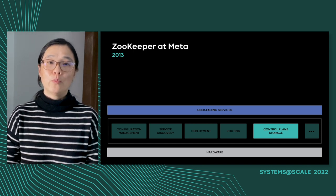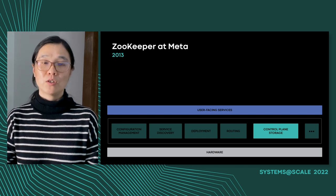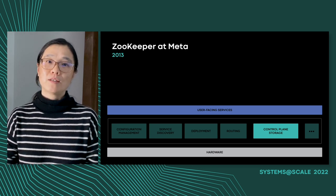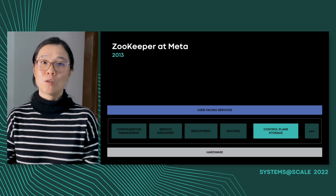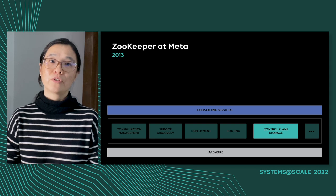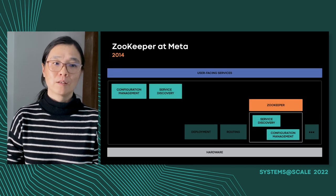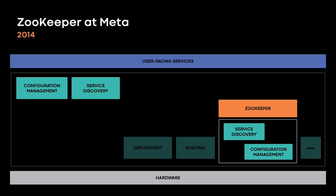However, we didn't stop at one single cluster. Over the years, ZooKeeper has grown into a control plane storage system that powers a lot of services at Meta. Around 2014, ZooKeeper started to power Service Discovery and Config Management at Meta. We had so many clusters — we needed Service Discovery and Config Management for just those clusters. So we built makeshift Service Discovery and Config Management functions so we could stay zero dependency, still not depending on any other outside services.